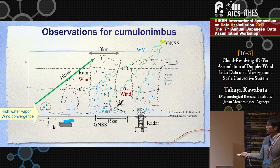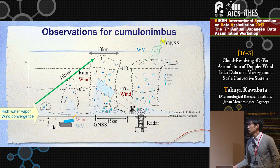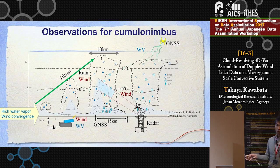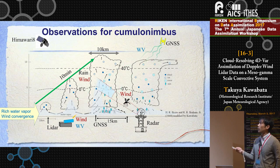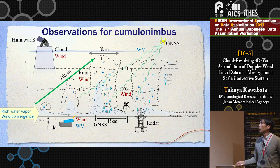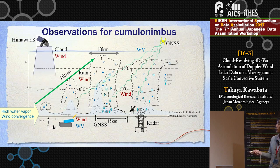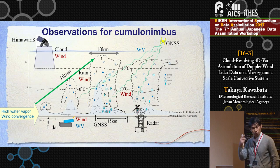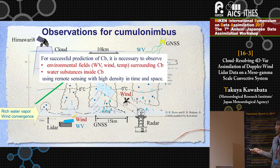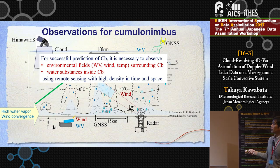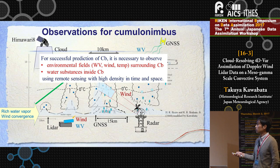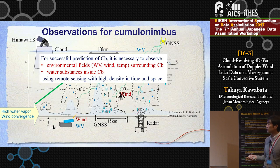We also have a LIDAR system, which observes wind field and water vapor field in the low troposphere. A new generation geostationary satellite, Himawari-8, provides cloud information as well as wind motion vectors at very short time intervals — 5 minutes, 1 minute, or less. For successful prediction of cumulonimbus, it is necessary to observe environmental fields of water vapor, wind, and temperature surrounding the cumulonimbus, as well as water substances inside it, using remote sensing networks with high density in time and space.